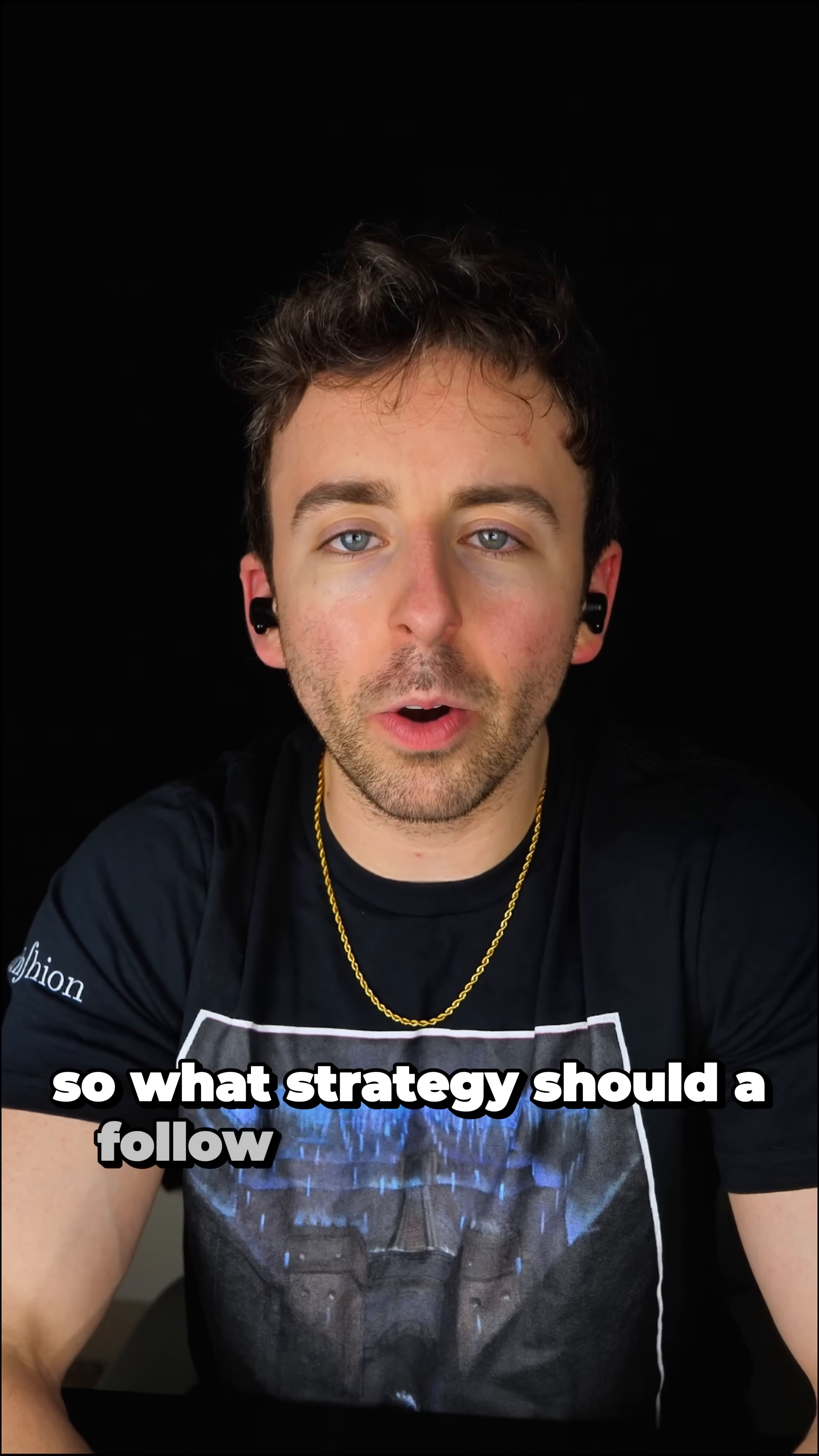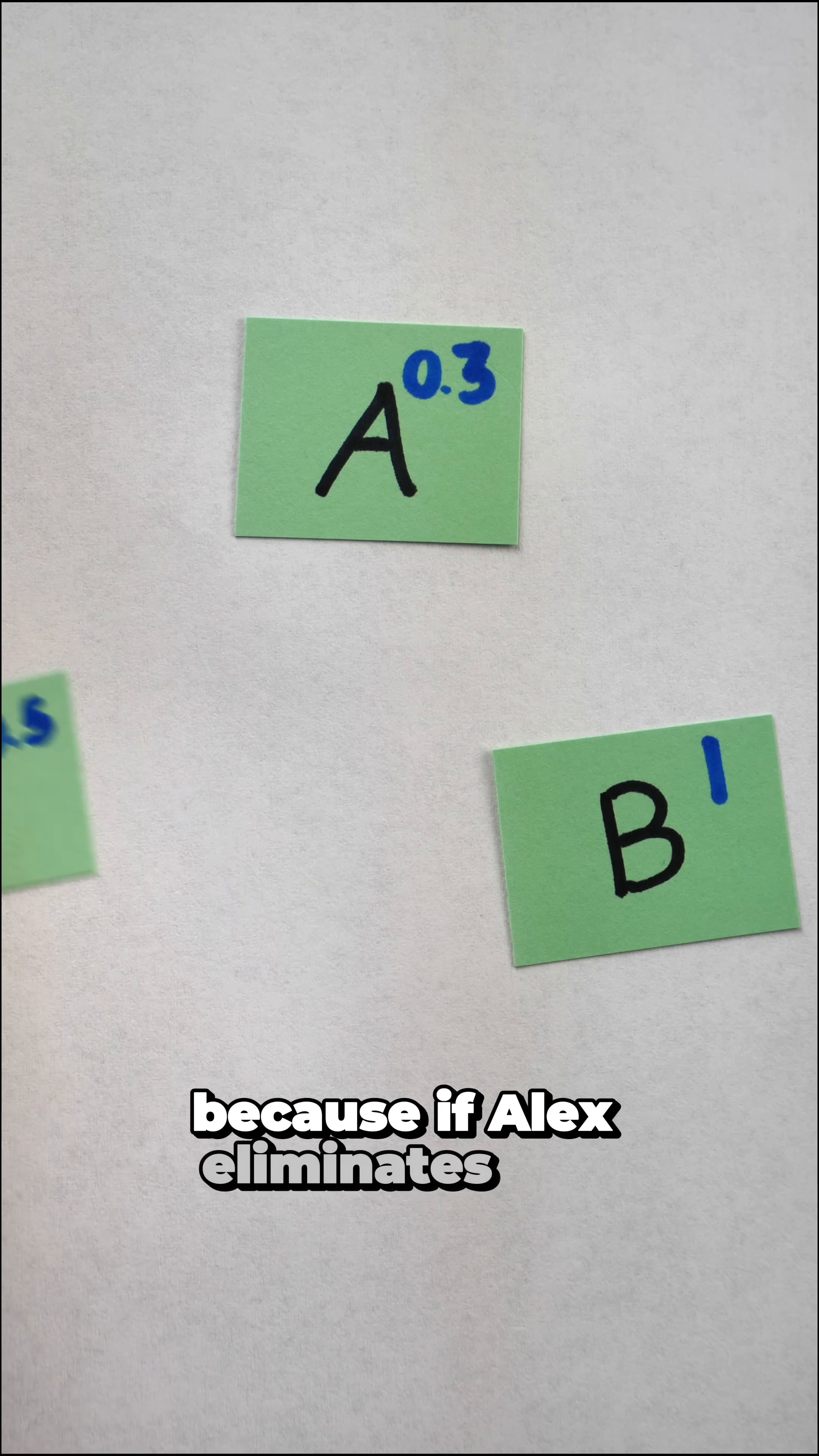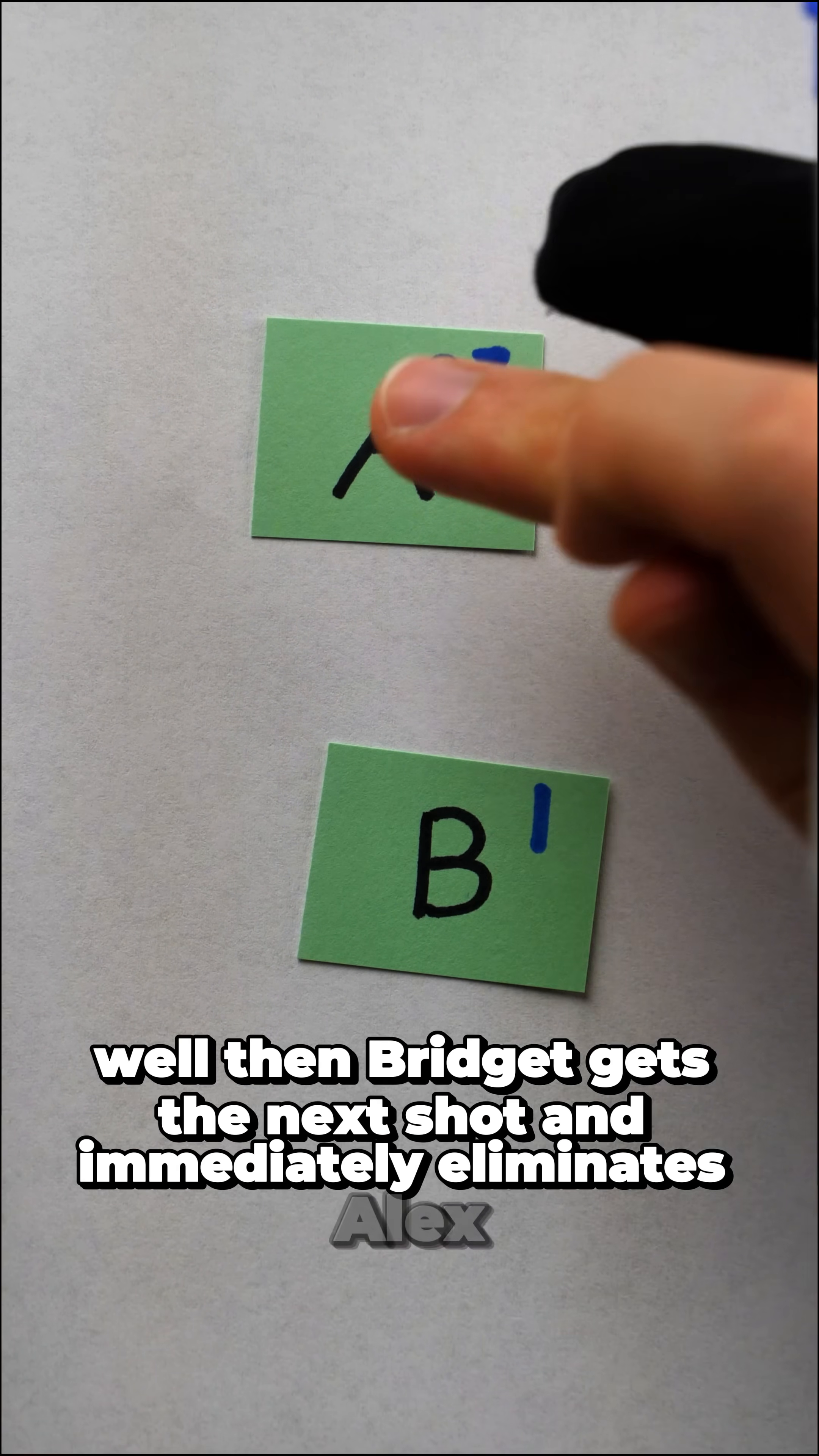So what strategy should Alex follow to maximize his chances of survival? Shooting at Carl doesn't make any sense, because if Alex eliminates Carl, then Bridget gets the next shot and immediately eliminates Alex.